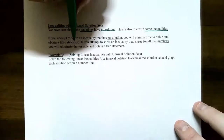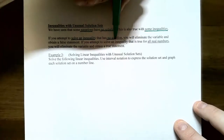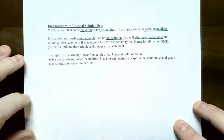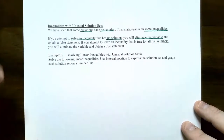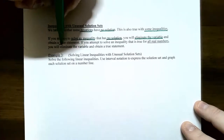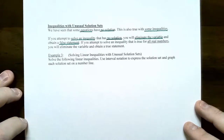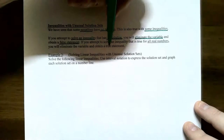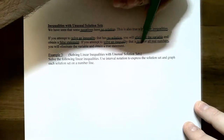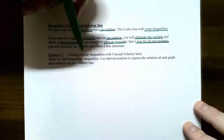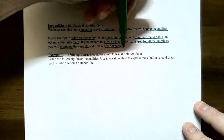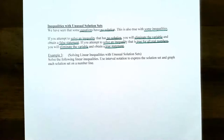If you solve an inequality and you have no solution, how do you know? Well, if you eliminate the variables — if you try to get the x variable on the same side of the inequality and the variables cancel out — and you obtain a false statement, then you have no solution, or the solution set is called empty. On the other hand, if you solve an inequality and you have a true statement, that means you eliminate the variable again, and the inequality is a true statement instead of a false statement. Just because you cancel out the variables doesn't mean no solution — you have to make sure the statement is either true or false.